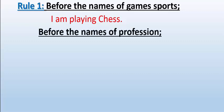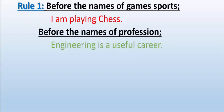Before the name of a profession, we also don't use an article. For example, 'Engineering is a useful career.' Engineering, doctor, plumber — before the names of professions, we don't use article.